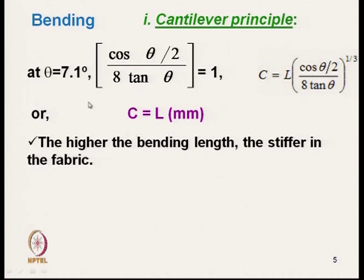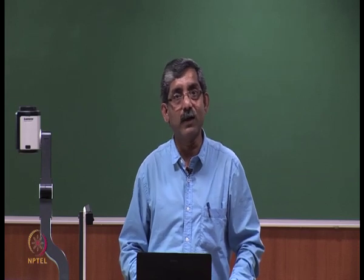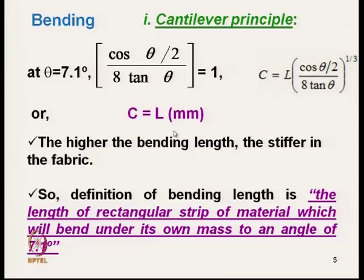The main problem is that at 7.1 degrees the fabric bends immediately after hanging — this angle is very small and difficult to measure accurately for very flexible fabrics. That is why we normally do not use 7.1 degrees. The bending length C is defined as the length of a rectangular strip which will bend under its own mass to an angle of 7.1 degrees with the horizontal. The overhanging length L that makes 7.1 degrees with the horizontal plane equals the bending length.